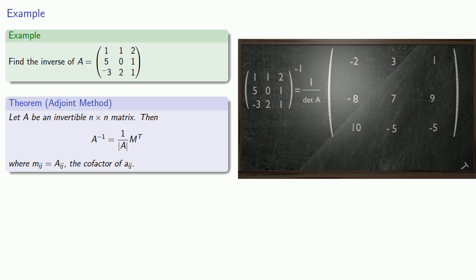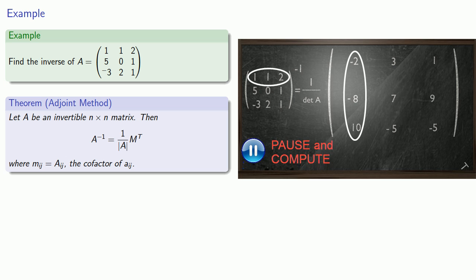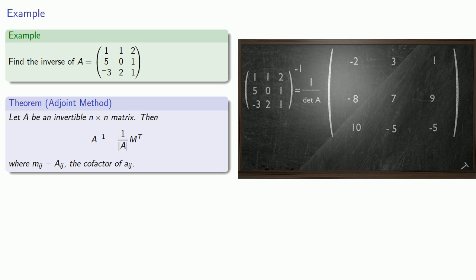Notice that if we multiply the original matrix times our transpose of the matrix of cofactors, the first row of the original times the first column of the transpose of the matrix of cofactors is going to give us an entry of 10. And what that means is that the determinant of the original matrix must have been 10. So we'll include that as a factor, which gives us the inverse of the original matrix.